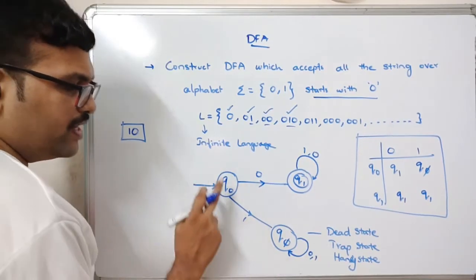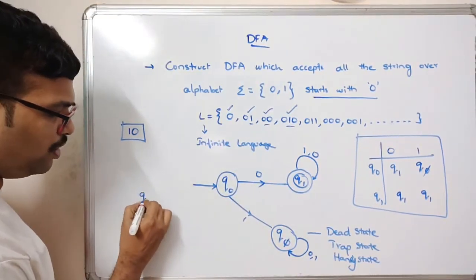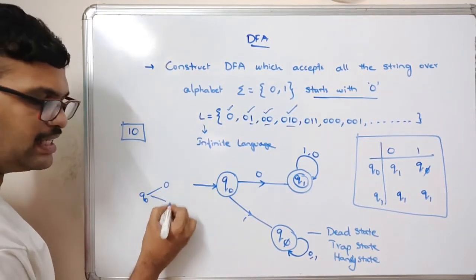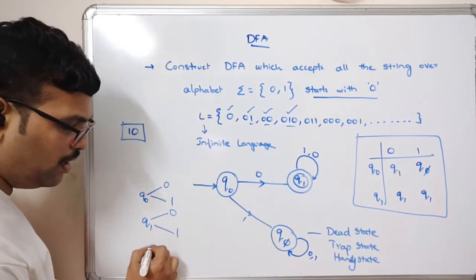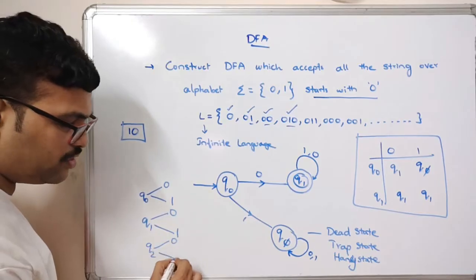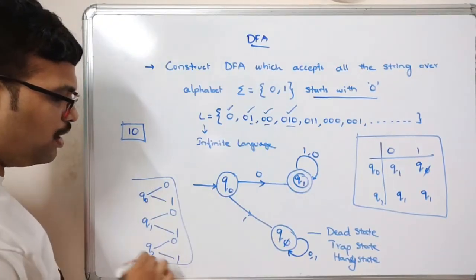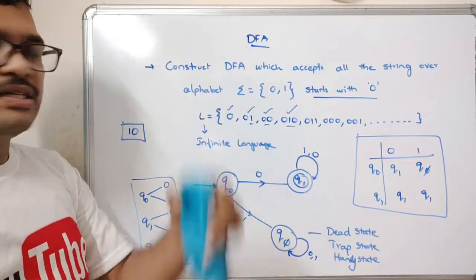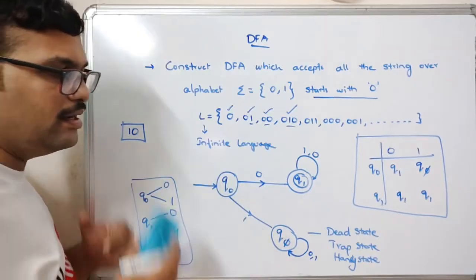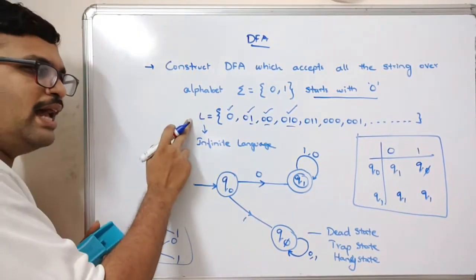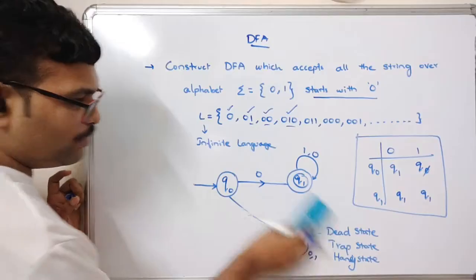This is the construction of a DFA for a 'starts with' problem. Remember: for every state in the DFA there must be exactly one transition for every input symbol — q0 needs transitions for 0 and 1, q1 needs transitions for 0 and 1, and so on. This is the defining condition of a DFA.